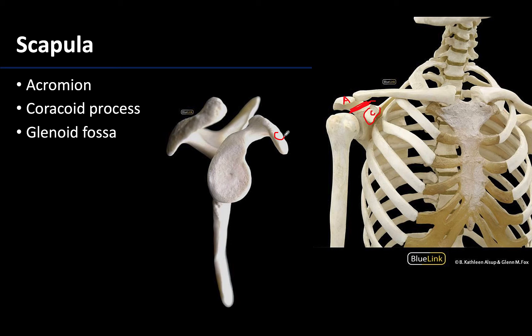Additionally, muscles attach to the coracoid process as well. We've talked previously that the pectoralis minor muscle attaches here, but more aligned with today's session, it will be a proximal attachment for the coracobrachialis — which has 'coraco' right in its name — as well as the short head of the biceps brachii. Only the short head; the long head will not attach on the coracoid process.